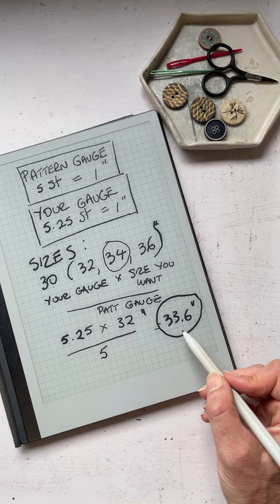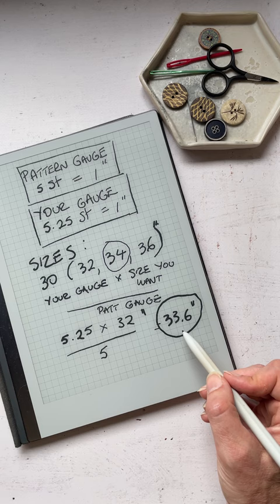So this is pretty close to the 34 inch size, so to get a 32 inch size for a gauge of 5.25, I will knit that size.